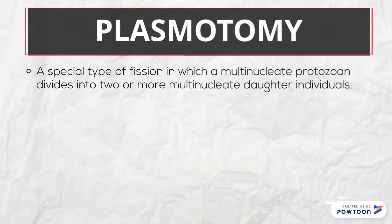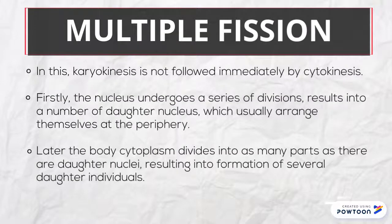Plasmotomy is a special type of fission in which a multi-nucleate protozoan individual divides into two or more multi-nucleate daughter cells or daughter individuals. The nucleus undergoes a series of divisions resulting in a number of daughter nuclei, which usually arrange themselves at the periphery. Later, the cytoplasm divides into as many parts as there are daughter nuclei, resulting in the formation of several daughter individuals.